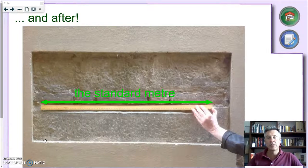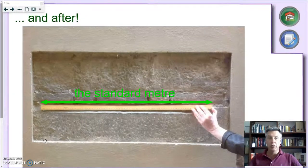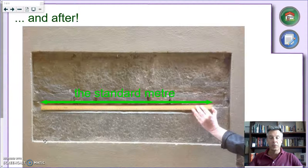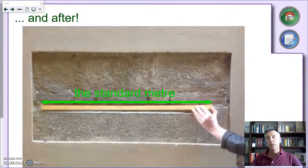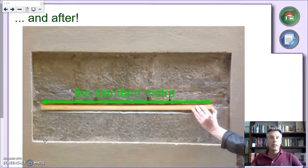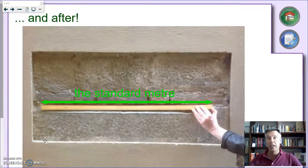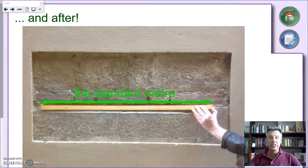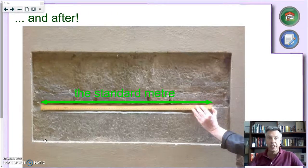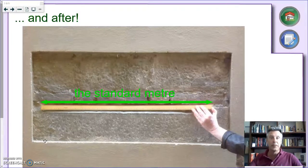But of course, this solution cannot stand for long. What happens when the king dies? What happens when a new king arrives? What happens if you change form of government? You can't rely on the properties of a human body. So at some point, it was decided we have to take units from something which is a little bit more fixed, like the size of the earth. And this is what exactly the French did, more or less at the time of the French Revolution. We're talking about the end of the 18th century.